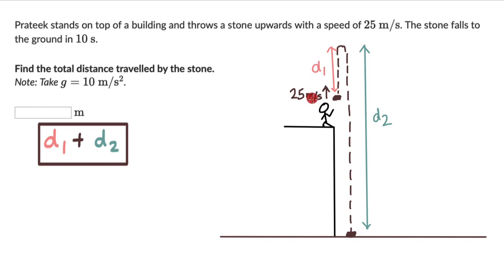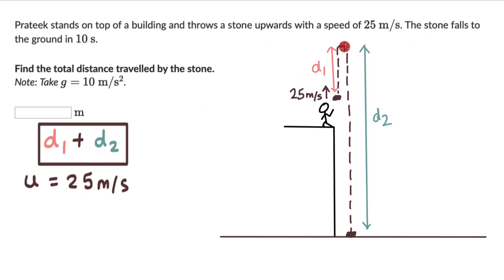For the first part of the motion, the initial velocity u is 25 meters per second. The final velocity at the topmost point is zero, because the stone momentarily comes to a state of rest at that point before falling back down. So v equals zero for the first part of the motion.